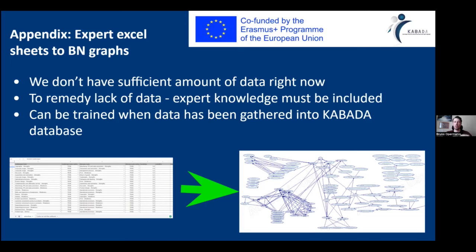These Bayesian networks, once we have this initial graph-like structure, can be trained later when we have data. As it is planned in the course of this project, the data will be available at the end of the summer. But till now, the generated suggestions are using only expert knowledge.